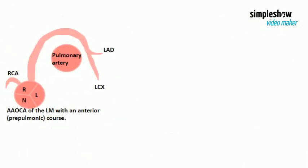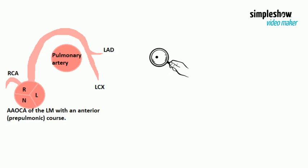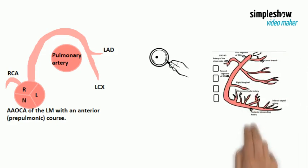A pre-pulmonic anomalous course is thought to pose no hemodynamic consequences, and will probably be found as an incidental finding on invasive coronary angiography.